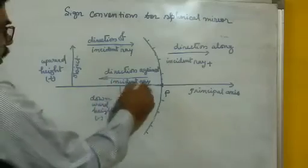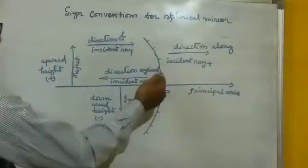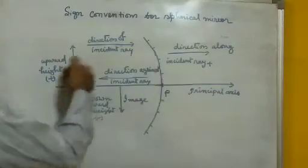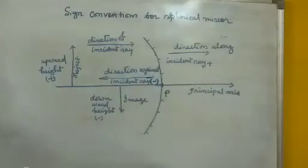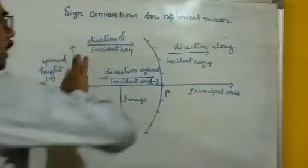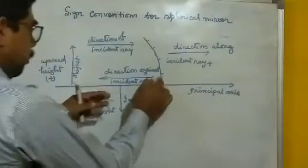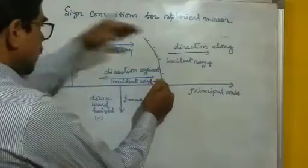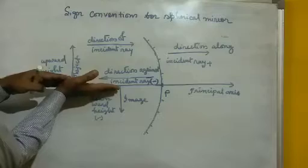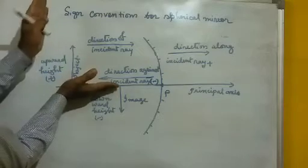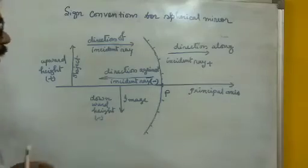The measurement along the direction of the incident ray is positive. Measurements against the direction of the incident ray are negative. Along the principal axis, upward height is positive and downward height is negative.